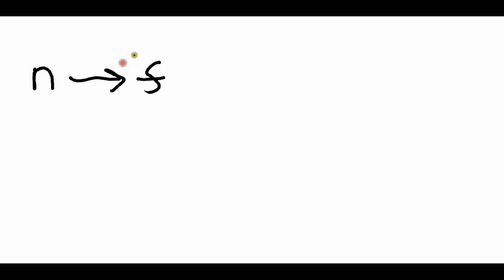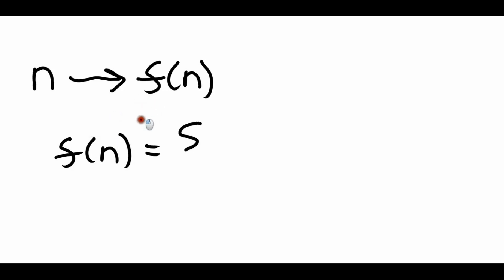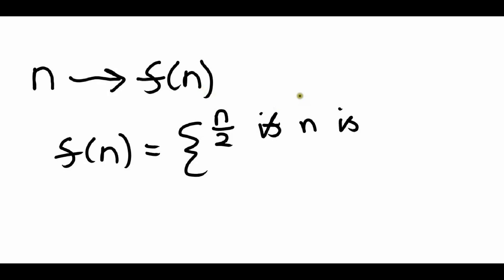What is the collapse conjecture? Let's say we have a positive integer n — that is a positive whole number. What we're going to do is change n into something I'm going to call f of n. f of n is going to be equal to n divided by 2 if n is even, and otherwise f of n is going to be equal to 3n plus 1.